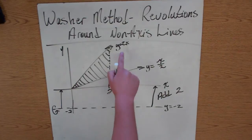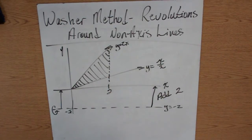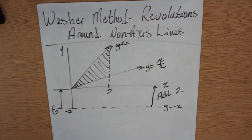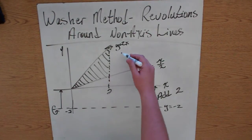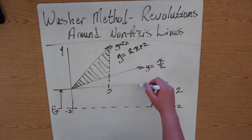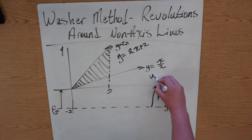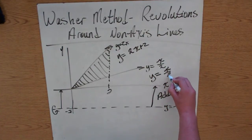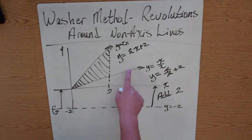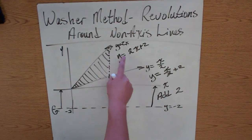So that's exactly what we're going to do to our two functions before we do the washer method. So, add 2 to this, you get y equals 2x plus 2. Add 2 to this, you get y equals x over 2 plus 2. So now, we're going to integrate these two functions instead of the original two.